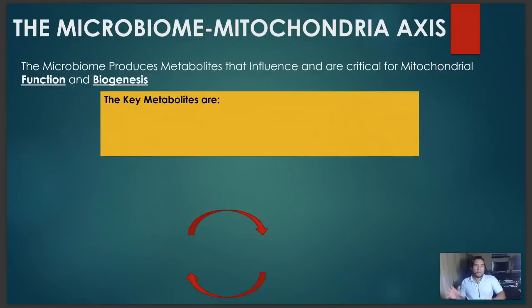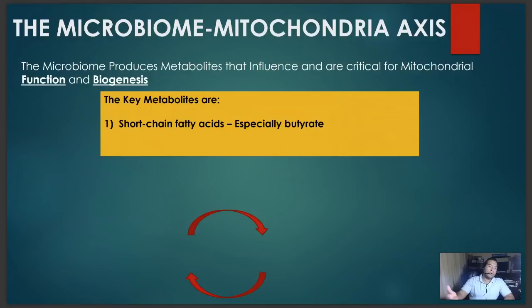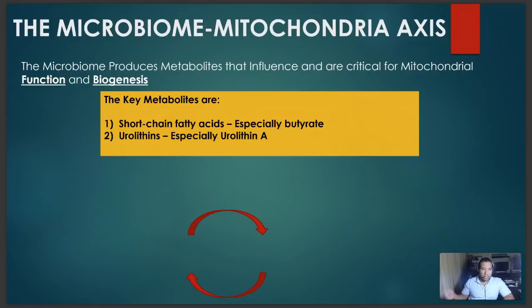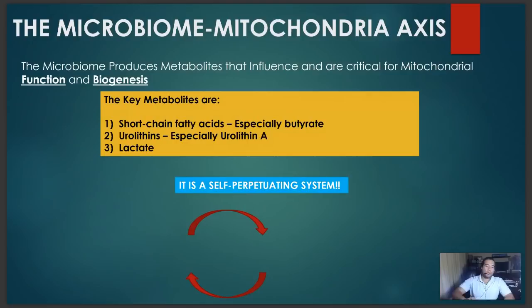Our microbiome becomes an essential supplier of metabolites for our own mitochondria to function. The main key metabolites identified are short-chain fatty acids — especially butyrate — urolithins, especially urolithin A, which is a very important molecule for the health and function of mitochondria in our cells and comes from the microbiome only, and lactate. What's beautiful about this whole thing is it's a self-perpetuating system — the stronger it gets, the better the system becomes.